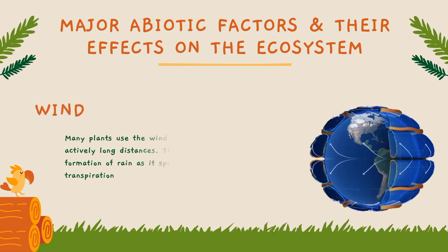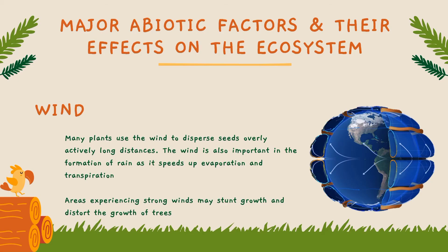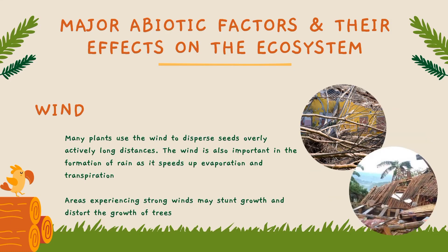Next is wind. Wind is moving air. It helps in the seed dispersal that assists in the pollination of plants. The wind is also important in the formation of rain as it speeds up evaporation and transpiration. Winds from dunes can be habitats for other organisms in the desert. Wind causes wave formation in lakes and oceans, and areas experiencing strong winds may distort the growth of trees and other buildings.